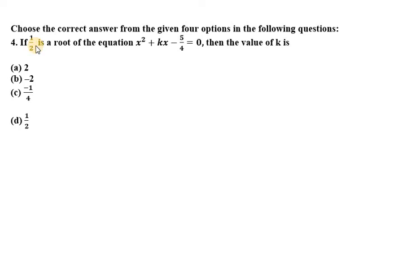Hello everyone, let's start with question number 4. In this it says if half is a root of the equation x square plus kx minus 5 over 4 equals 0, then the value of k is.